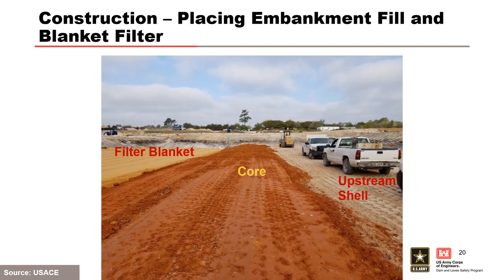A photo looking toward the right abutment shows the upstream shell material, the core, and the filter blanket. The filter blanket was kept slightly above the core to reduce potential contamination of core fines into the filter blanket. Some wheeled equipment had passed over the core, so prior to placing additional fill, the surface was scarified to about two inches deep to remove the smooth surface, ensuring no seepage path or potential weak zone would form across the embankment.